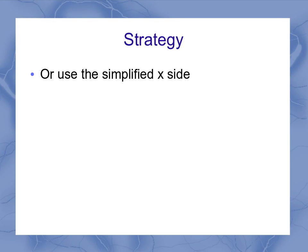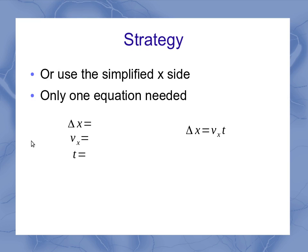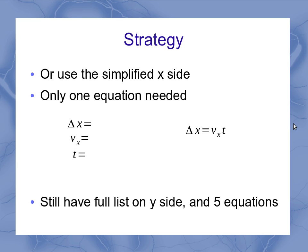You could also use a simplified x side, where you list only the relevant variables, the displacement, the velocity in x, and the time. And we don't have to say initial and final velocity, because it never changes. And we don't have to list the acceleration, because it's not going to come into our equations. In that case, I would only use just the one equation that relates the displacement, the velocity, and the time. But I still have a full list of five equations to use for the y side.